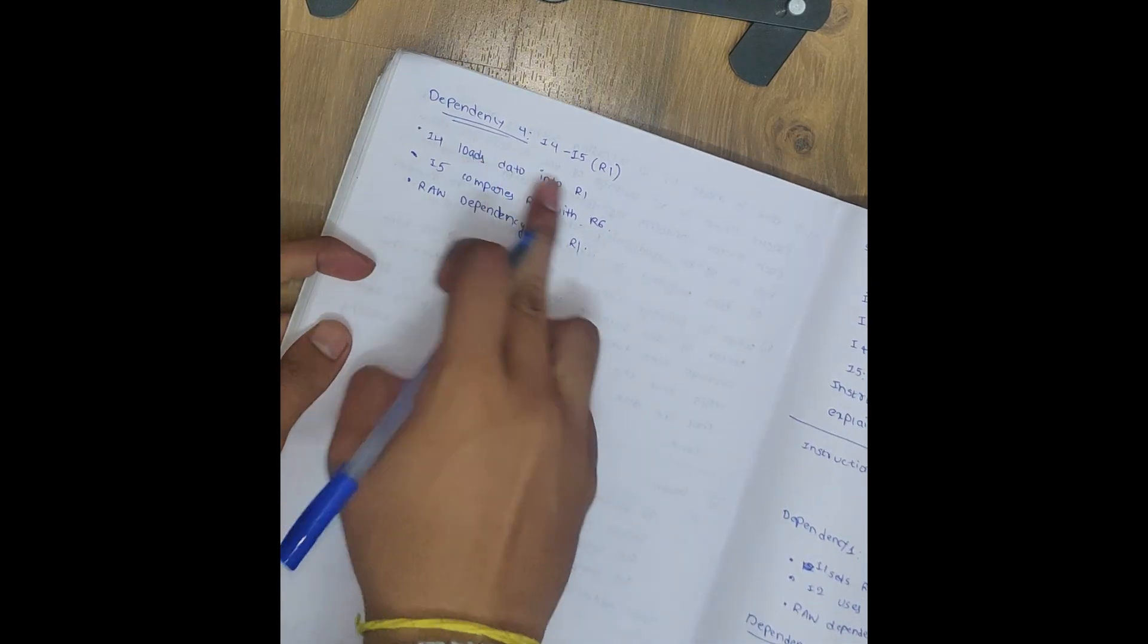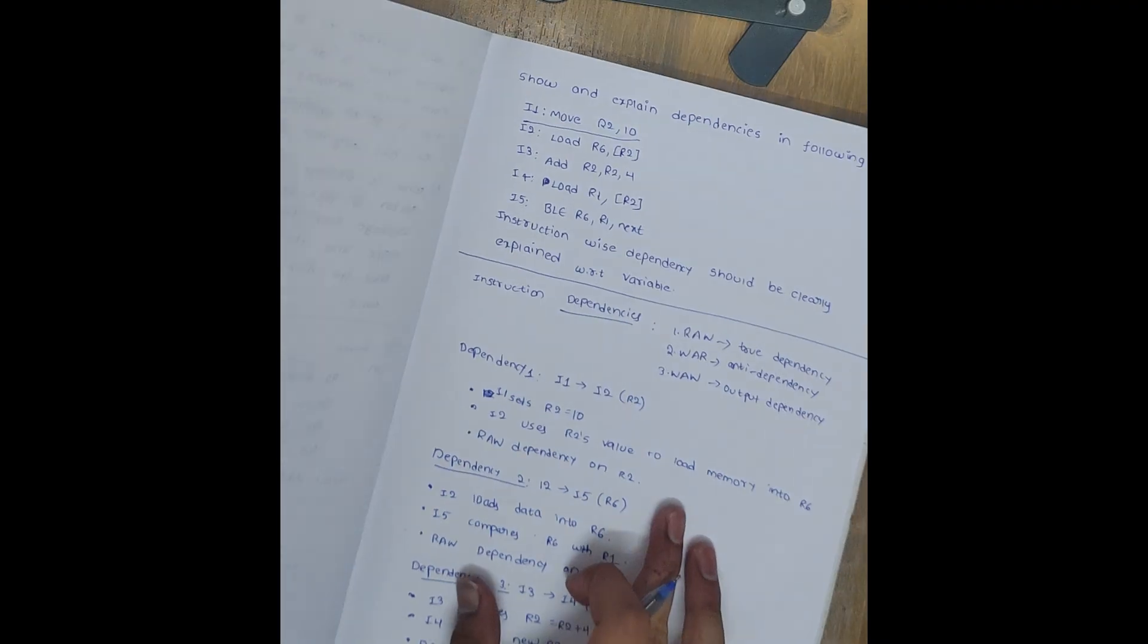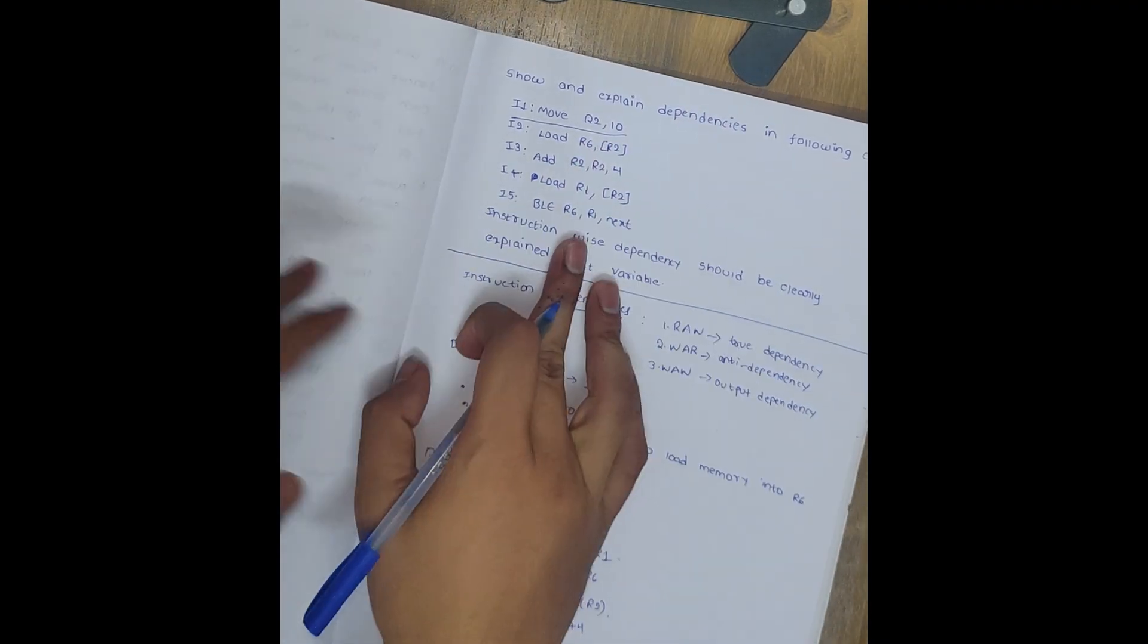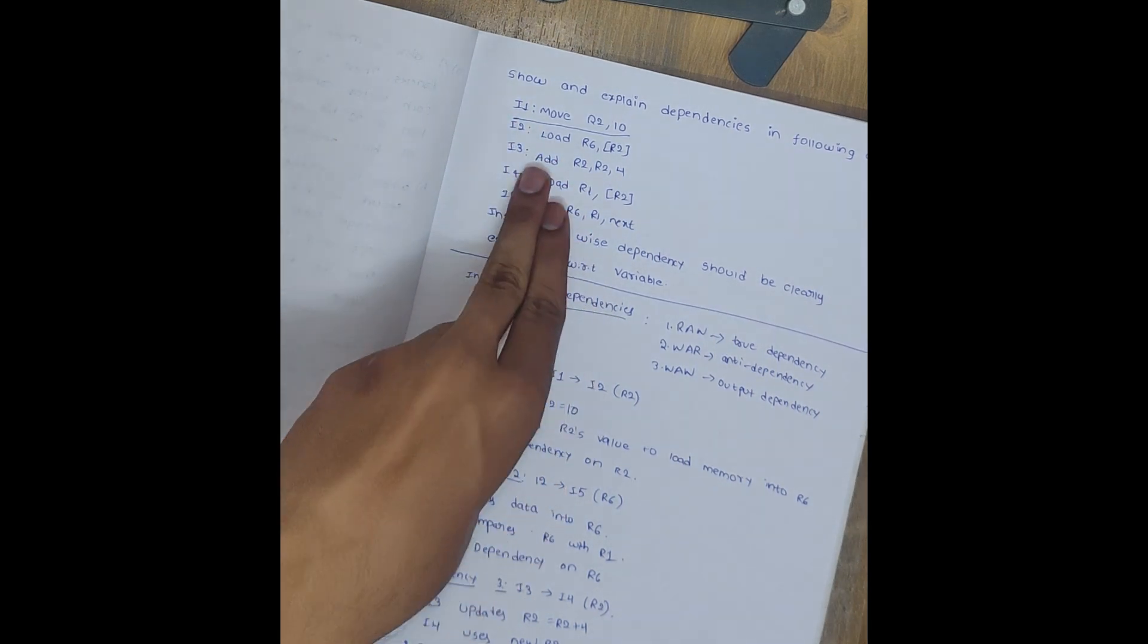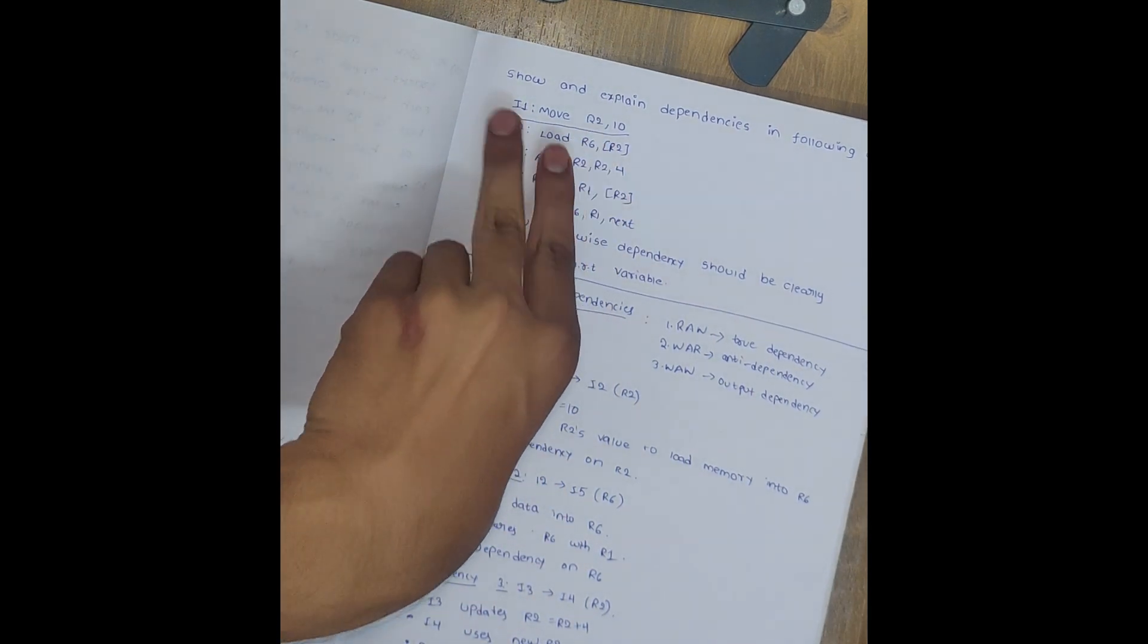So you got it right? Dependency 4. So these are only four dependencies. First you can see what things you are using, what the instruction is loading or saving, and where it is being used. Here you can see first R2 is loading - R2 stores the value of 10, it sets the value, and after that it uses R2's value in instruction 2.